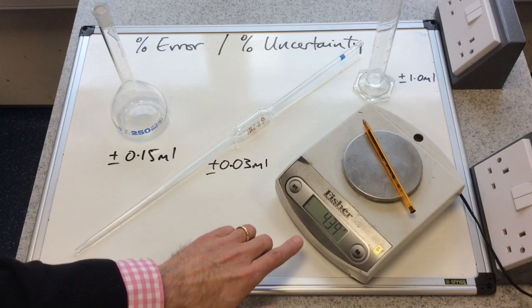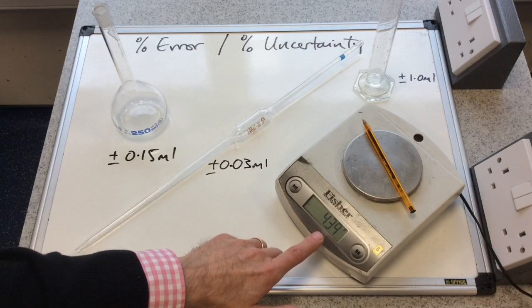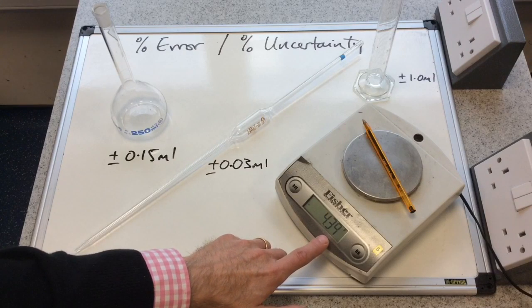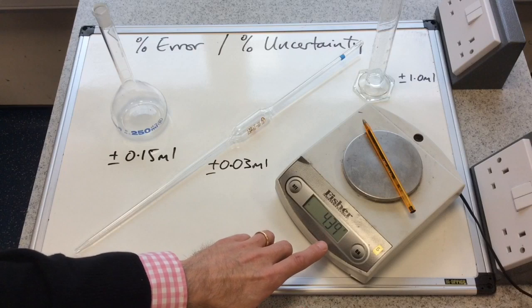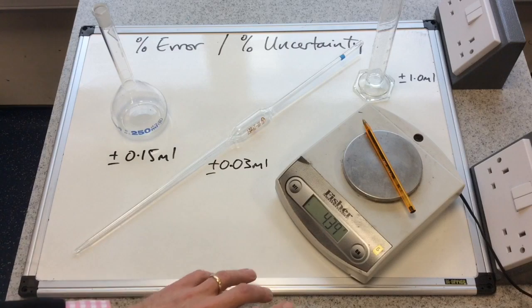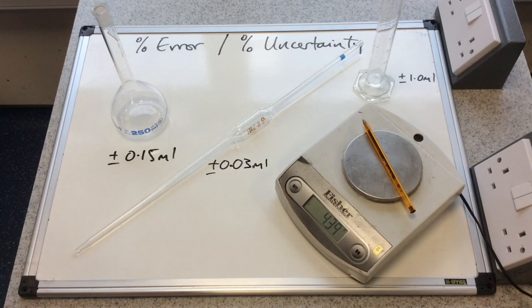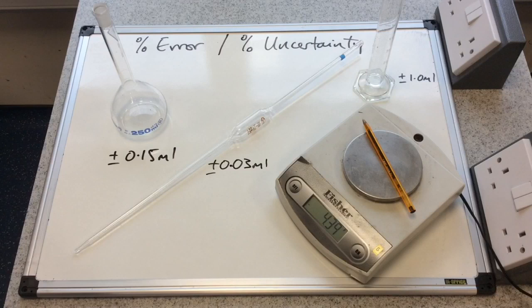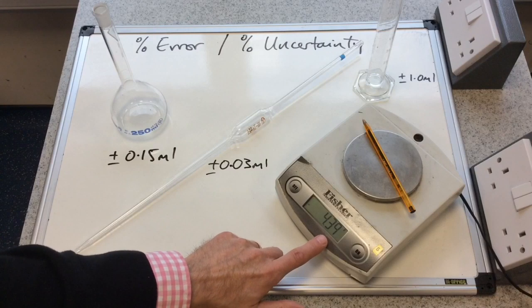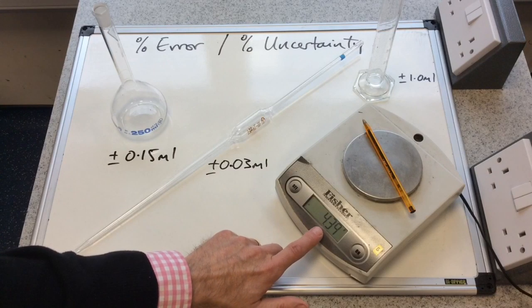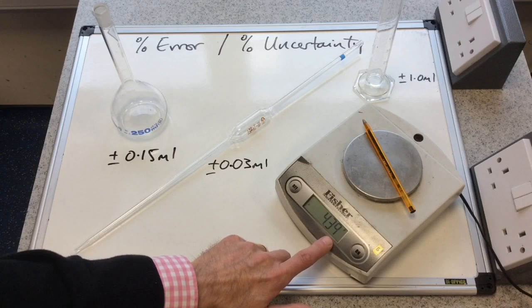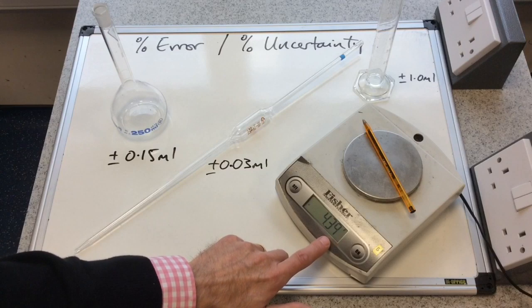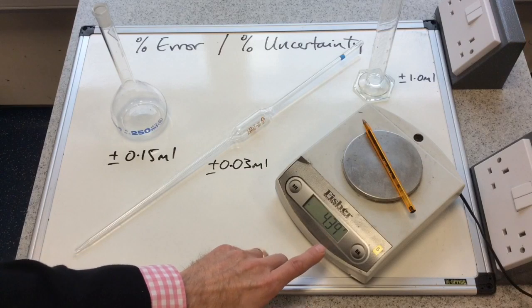So there's a sort of general rule of thumb to accommodate that. You can see this 2DP balance is obviously reading to the nearest 0.01 of a gram, 100th of a gram. So the general rule of thumb is we would take half of the smallest division and make that the uncertainty. So the smallest thing this can measure is 0.01, so we half that so we'd get 0.005 grams.